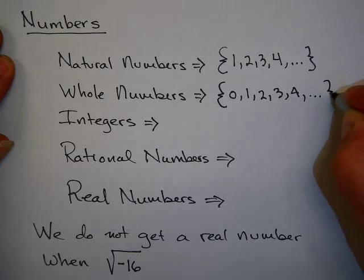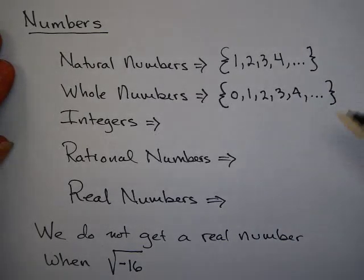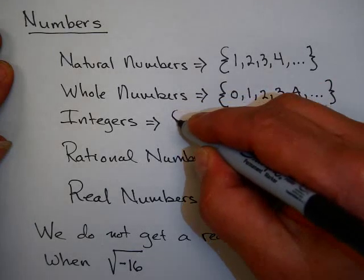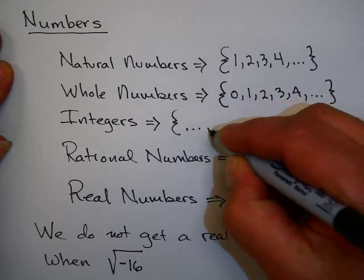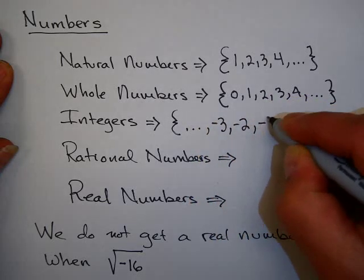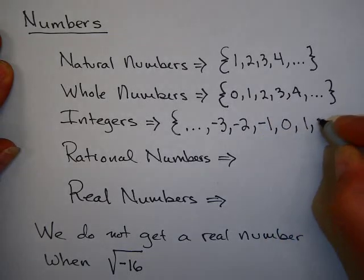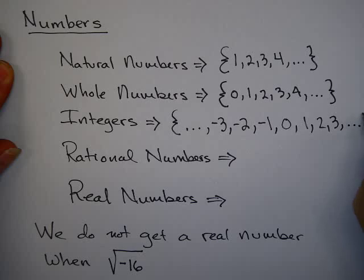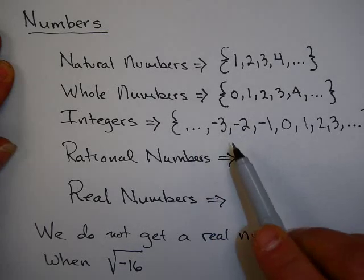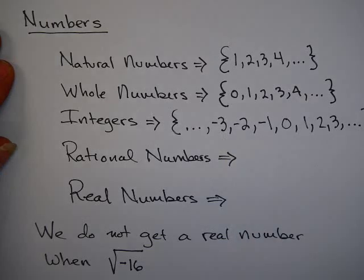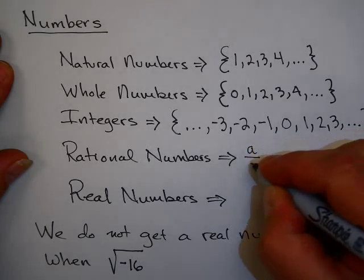The whole numbers are all the natural numbers plus the number 0. These seem fairly intuitive. However, throughout history, it took a long time for humans to accept the idea that there could be a number, namely 0, to represent nothing. It's not too much of a leap to go from there to what are known as the integers. The integers are both the positive and negative whole numbers. You can think of many applications in life where you have negative numbers, like a negative temperature, a negative bank account, or a loss of yardage in football.